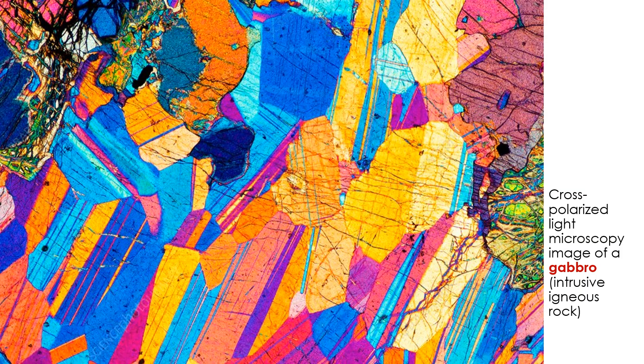Once your thin section is complete, you can stick it under a microscope and play with the properties of light that pass through it. As you can see in this sample, the use of cross-polarized light reveals a wide array of minerals in gabbro, a type of igneous rock.